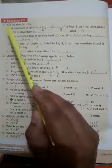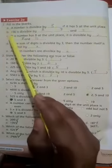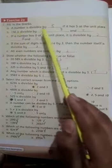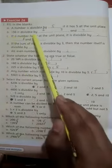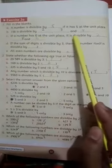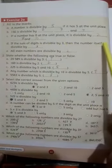A: A number is divisible by 5 if it has 5 at the unit place. B: 156 is divisible by 2, 3, and 4. C: If a number has 0 at the unit place, it is divisible by 2, 5, and 10. D: If the sum of the digits is divisible by 3, then the number itself is divisible by 3. E: All even numbers are divisible by 2.